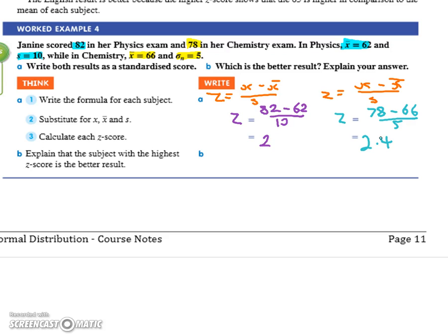Okay, so this second one, which is the better result? Explain your answer. Chemistry is the better result, has a higher z-score, which means it is further above the mean. All happy with that? You need to write that. Which is the better result? Chemistry. Then you have to say why. Higher z-score. You're using the z-scores to decide it's better, so you probably should mention that in your answer. All good.